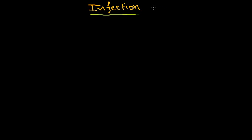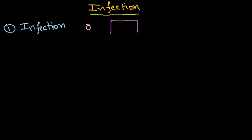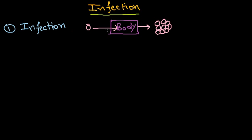The infections that Staphylococcus aureus can cause are majorly of two different types. The first is simply called infection. If Staphylococcus aureus enters into our body, it will colonize inside — from one it can produce many more. This phenomenon is called the infection phenomenon, where the bacteria invade and establish colonization inside the host.